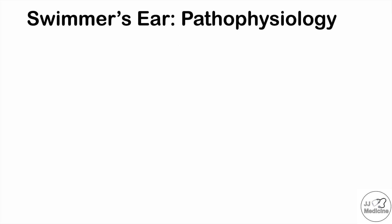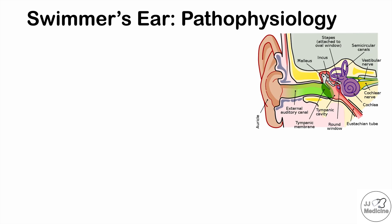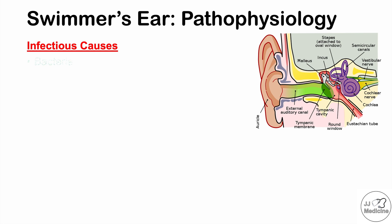Now let's talk about the pathophysiology behind otitis externa. Here is a diagram of ear anatomy showing the external auditory canal that leads into the ear and stops at the tympanic membrane — the eardrum. This is all considered the external ear. Past the tympanic membrane is the middle ear, where an infection would be called otitis media. We're talking about infection in the external auditory canal specifically, and most of the time it is caused by bacteria.